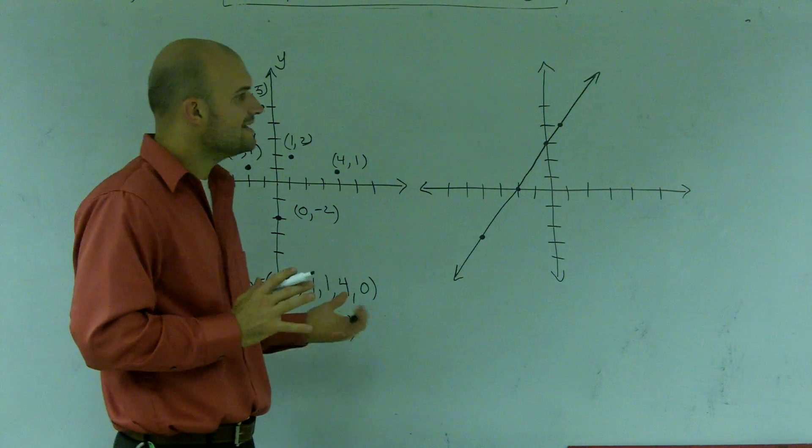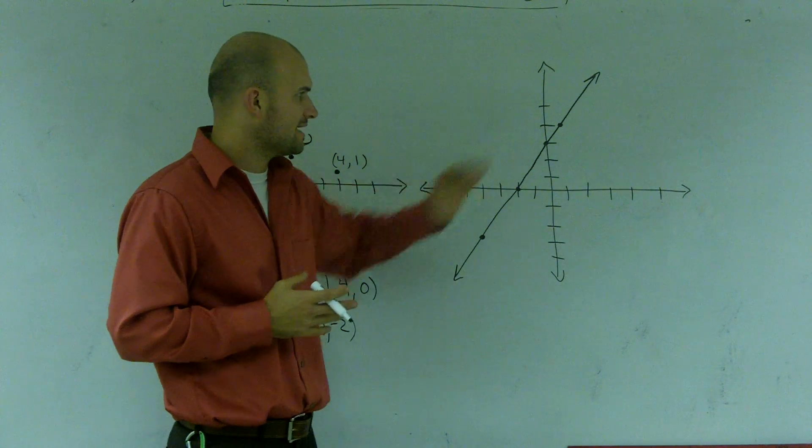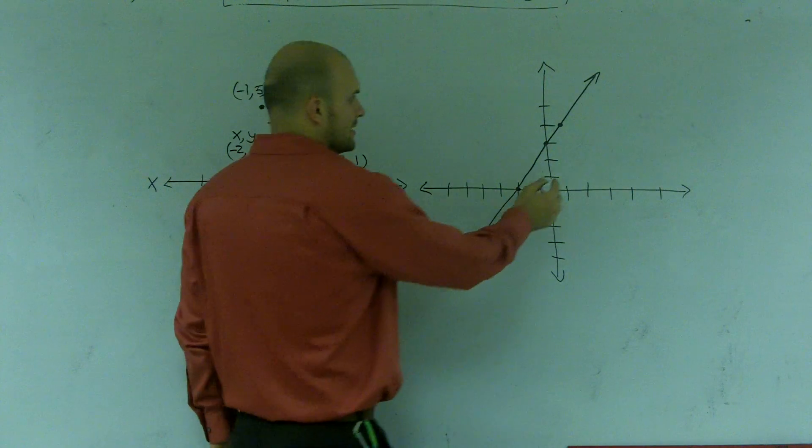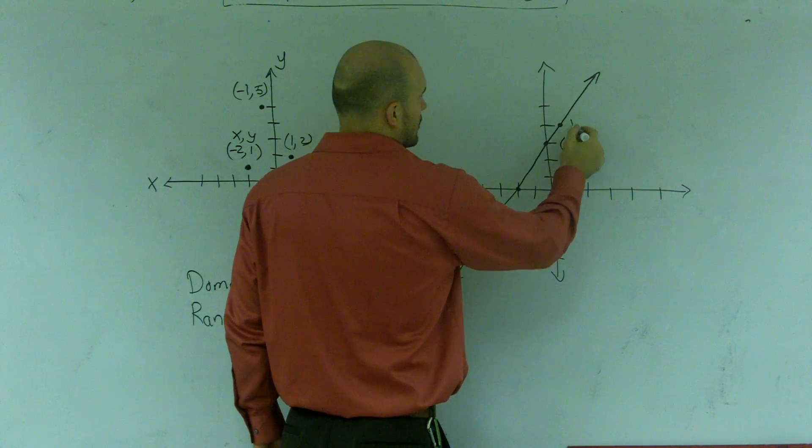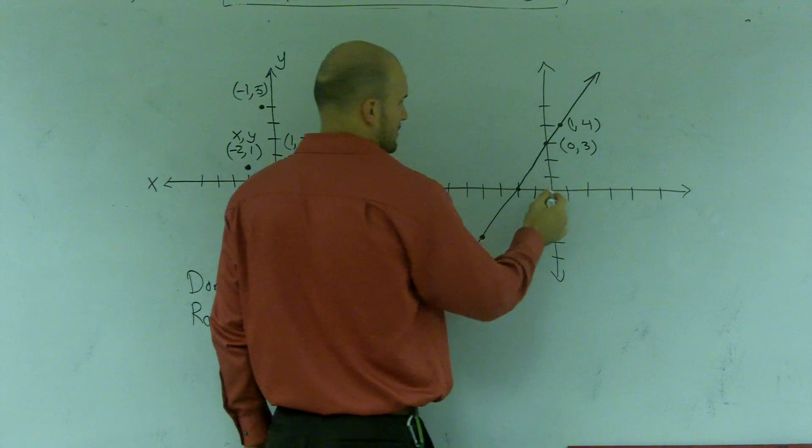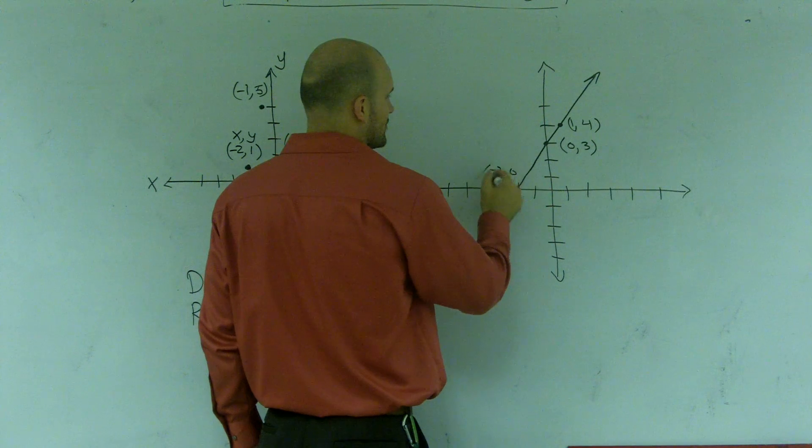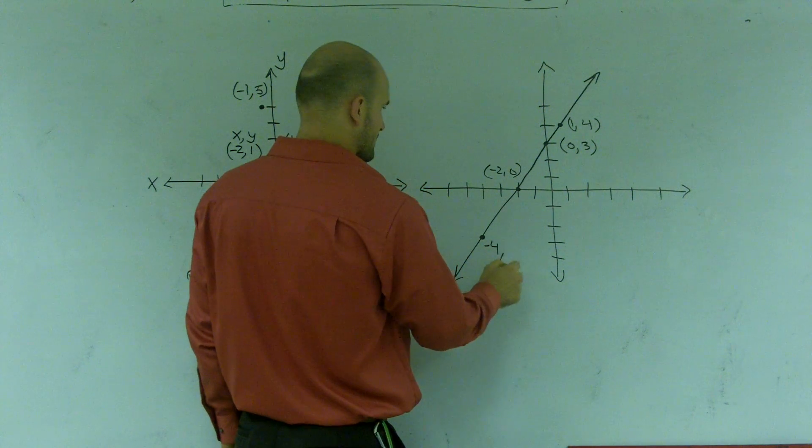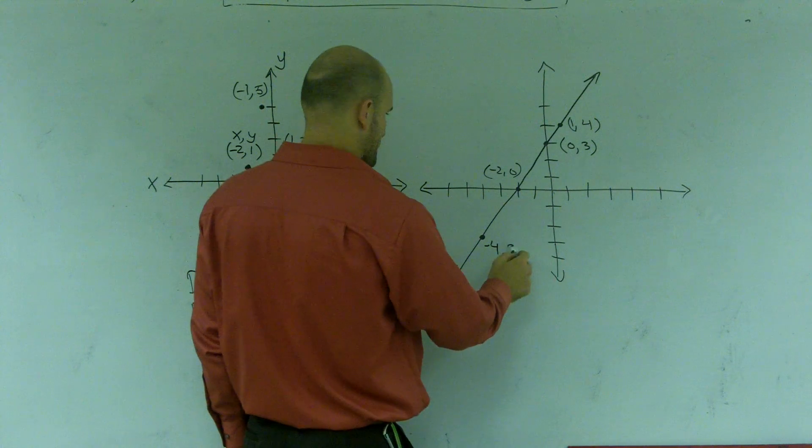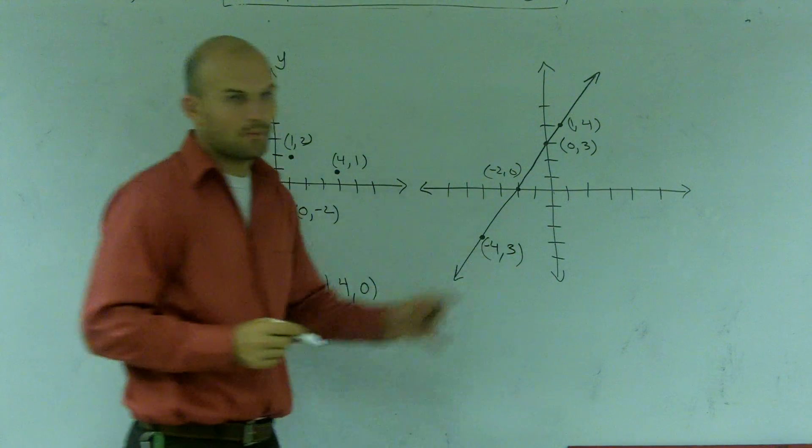All right. Over here, I have a continuous function. And one thing I did is I labeled out a couple points so you can see them. One here is going to be zero, three, one, four, negative two, zero. And here, I went one, two, three, four, negative four, one, two, three. Okay? So I labeled out a couple points.